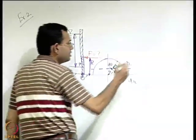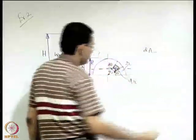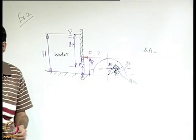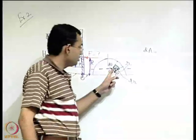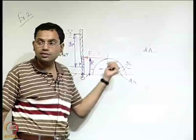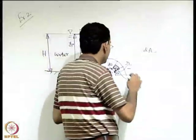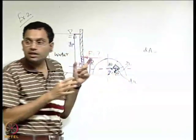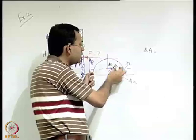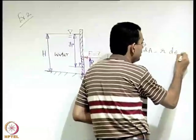The differential area represented by the element is roughly like a rectangle: one side is r dθ and the other side is dr. So the differential area dA = r dθ dr.